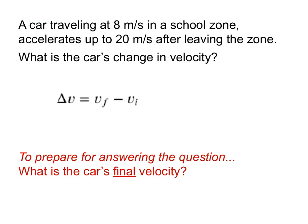So let's consider this question. A car is traveling at eight meters per second in a school zone and it accelerates. What would be the car's change in velocity? We're going to solve this in just a minute. But before we do, let's think about something that's very important. And that is, what is the car's velocity at the end of the motion? That would be the car's final velocity. So the final velocity would be the 20 meters per second. That's what's happening at the end of the story when the car leaves the school zone.